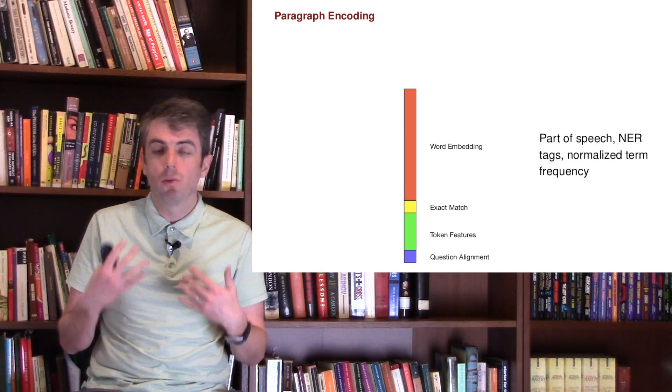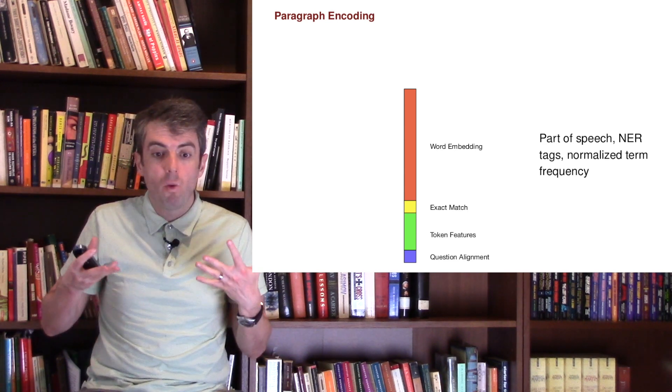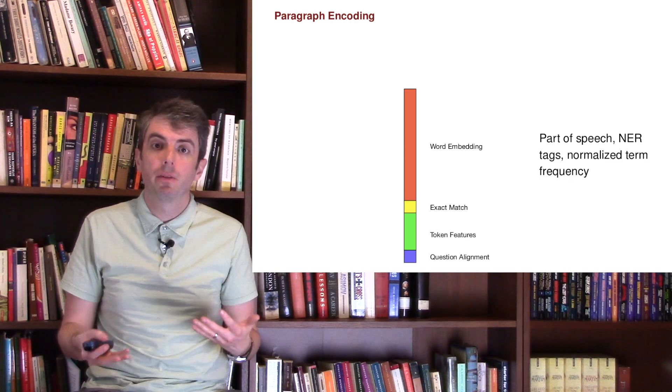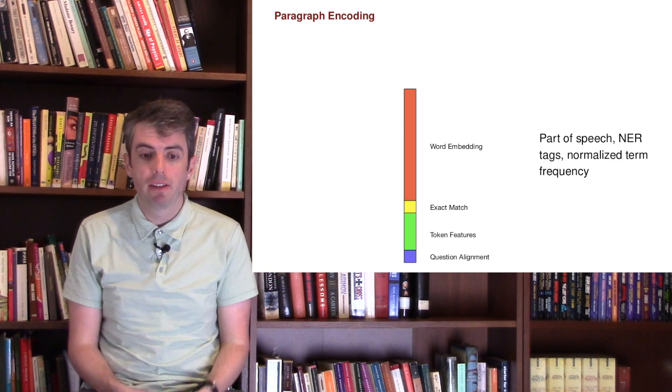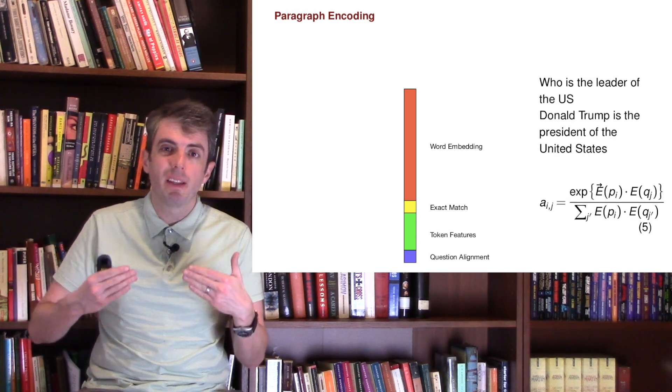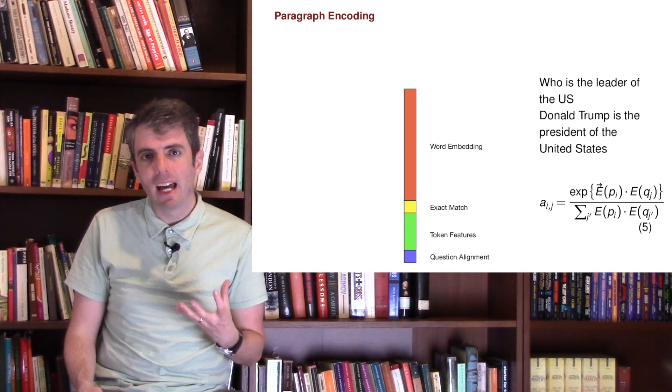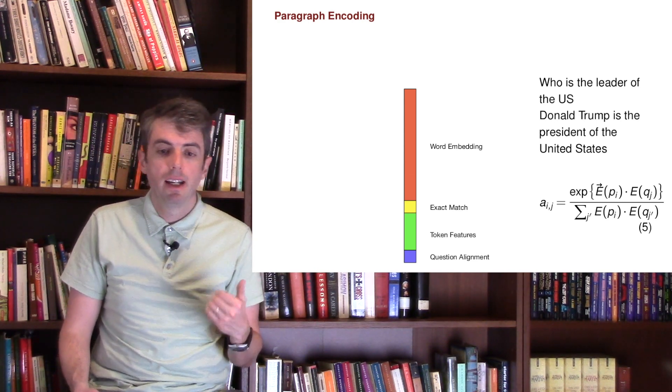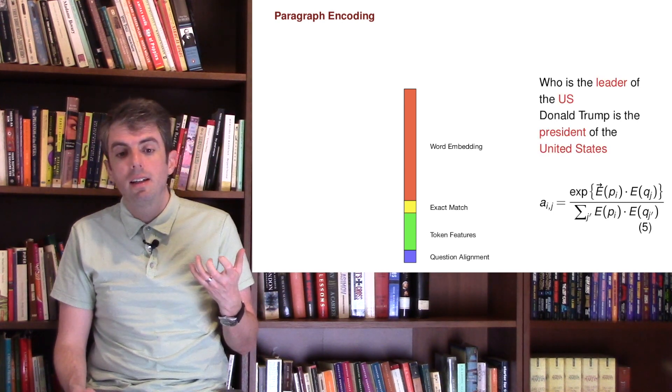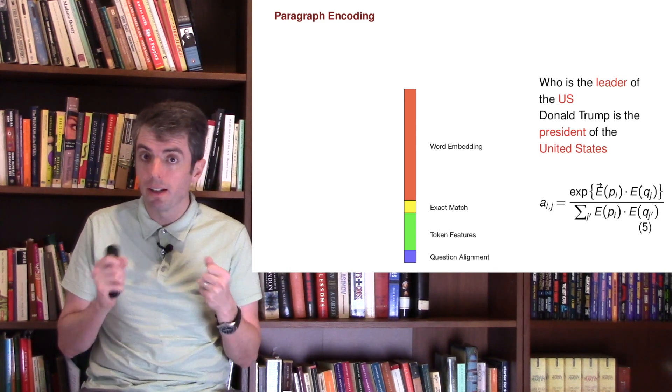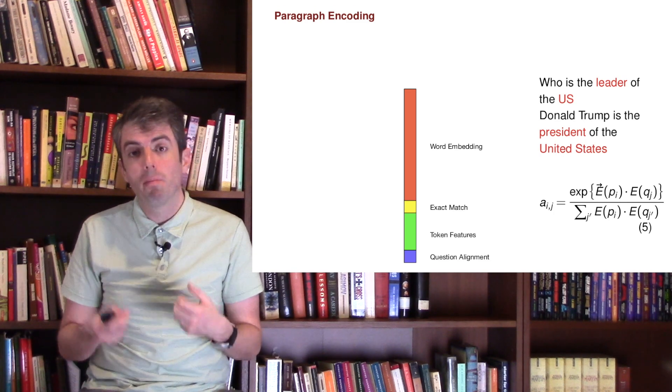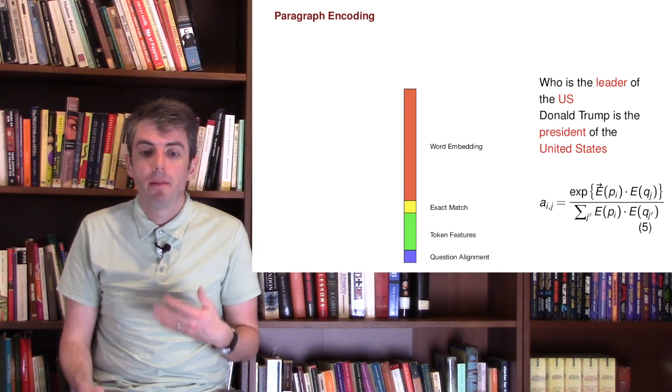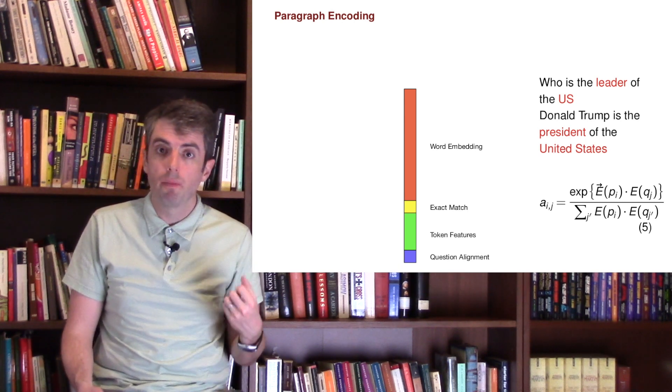We have a bunch of token features that represent information about what words we're seeing in the passage - is it a named entity, what's its term frequency, what's the part of speech? All of this information can get encoded in a token feature segment of our big vector. Finally, we also want to include matches between the question and the answer that maybe aren't exact, but they're related to each other. Let's say you have the question text 'who is the leader of the US?' and the passage text 'Donald Trump is the president of the United States.' Leader might be associated with president in terms of the dot product between the word embeddings, and United States might have a good dot product with US. They both appear in similar contexts. So you can encode this intuition by taking the dot product of the embeddings and using that as a score between question and answer text.